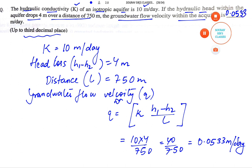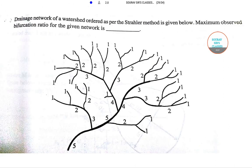The next question: drainage network of a watershed ordered as per Strahler method is given below. We need to comment on the maximum observed bifurcation ratio for the given network. First we will define the bifurcation ratio.